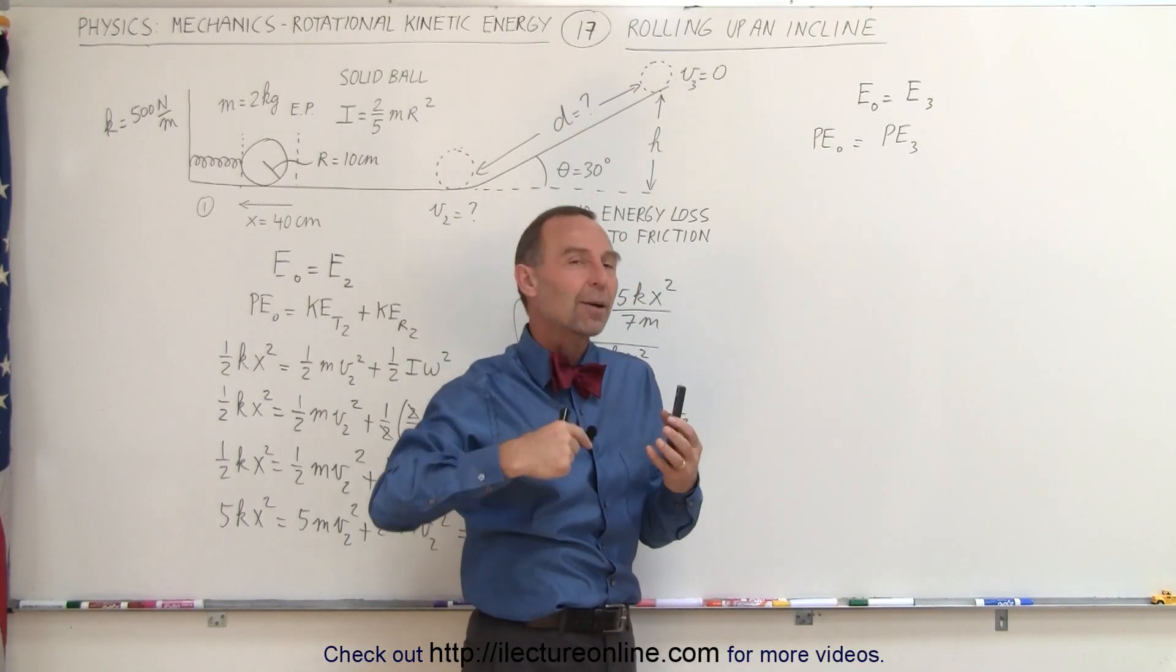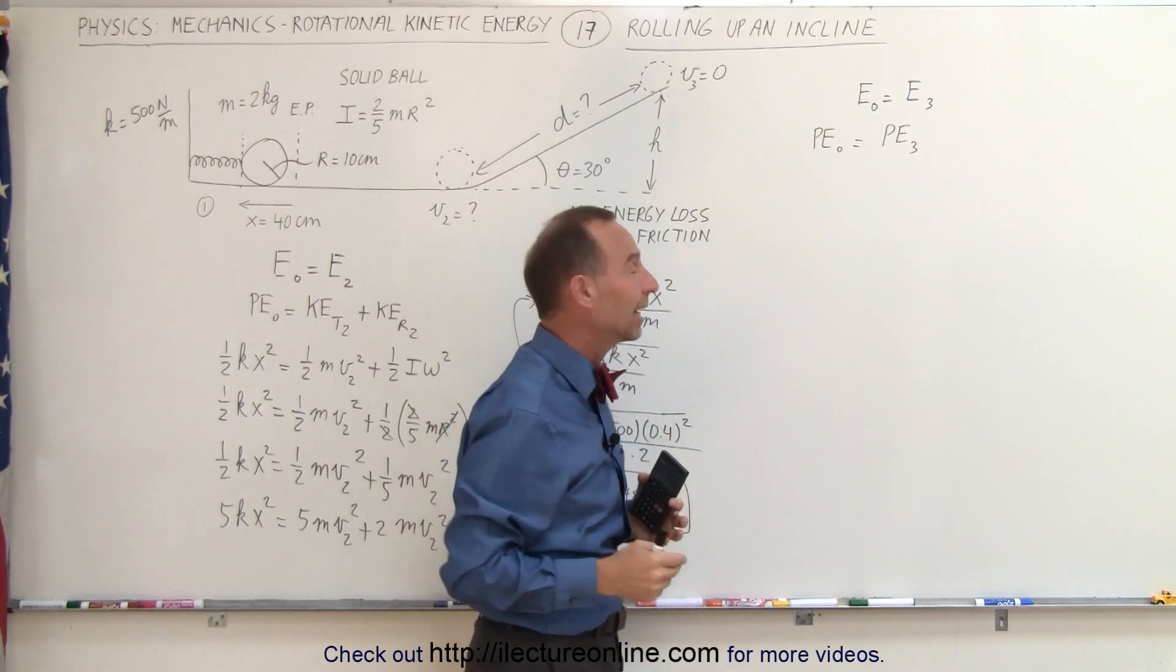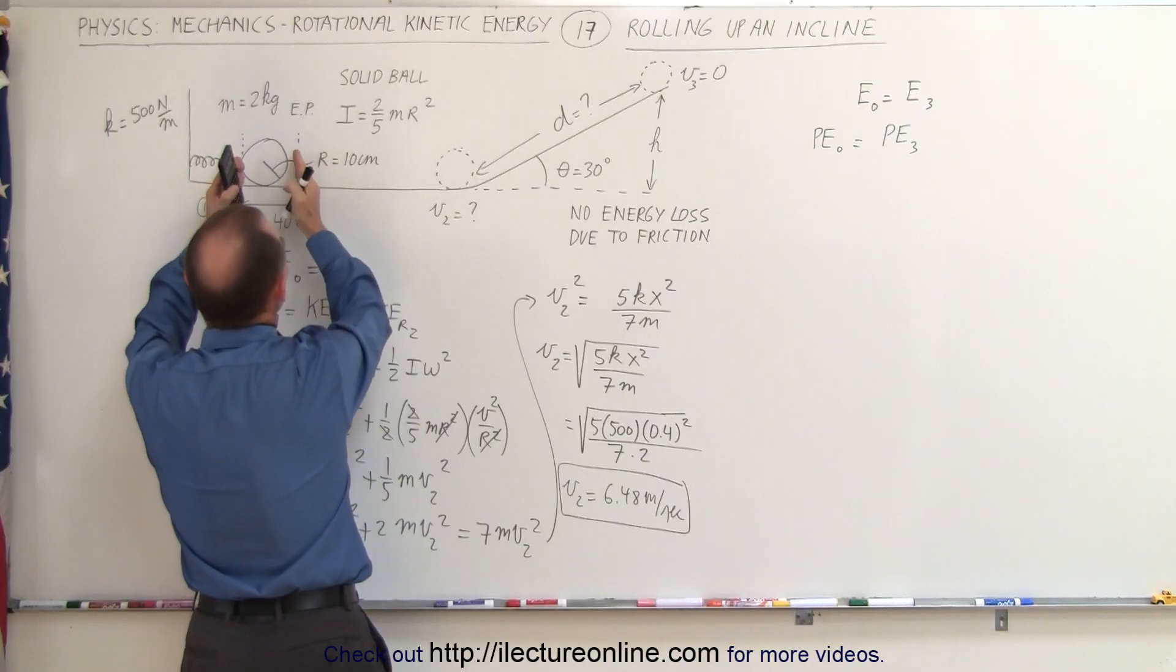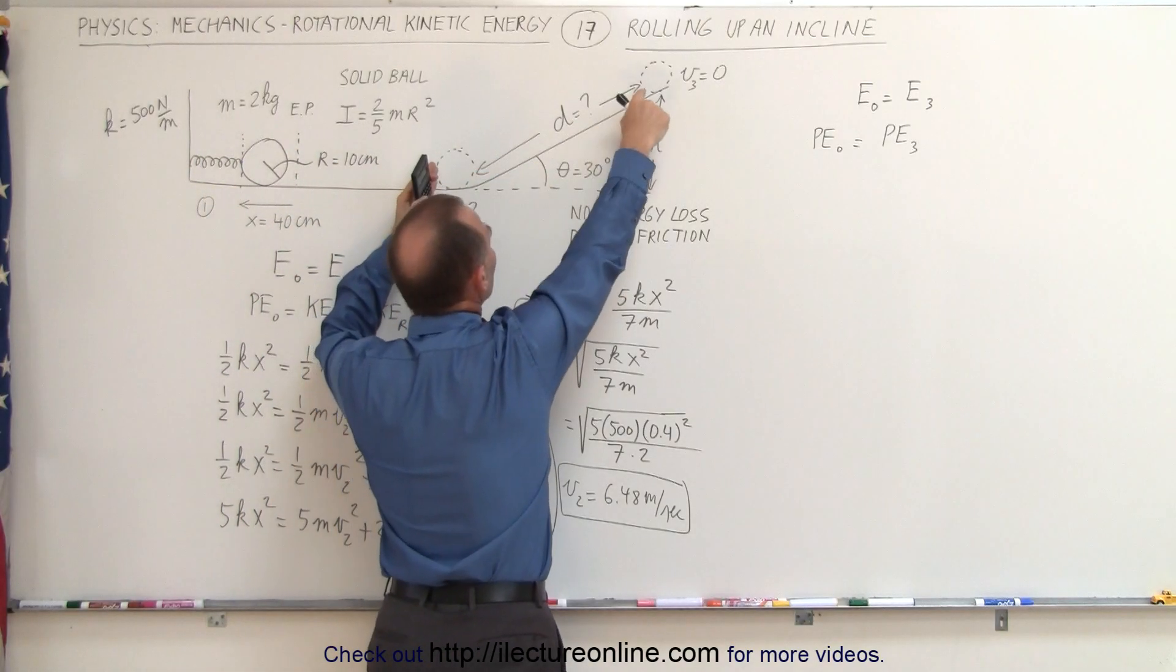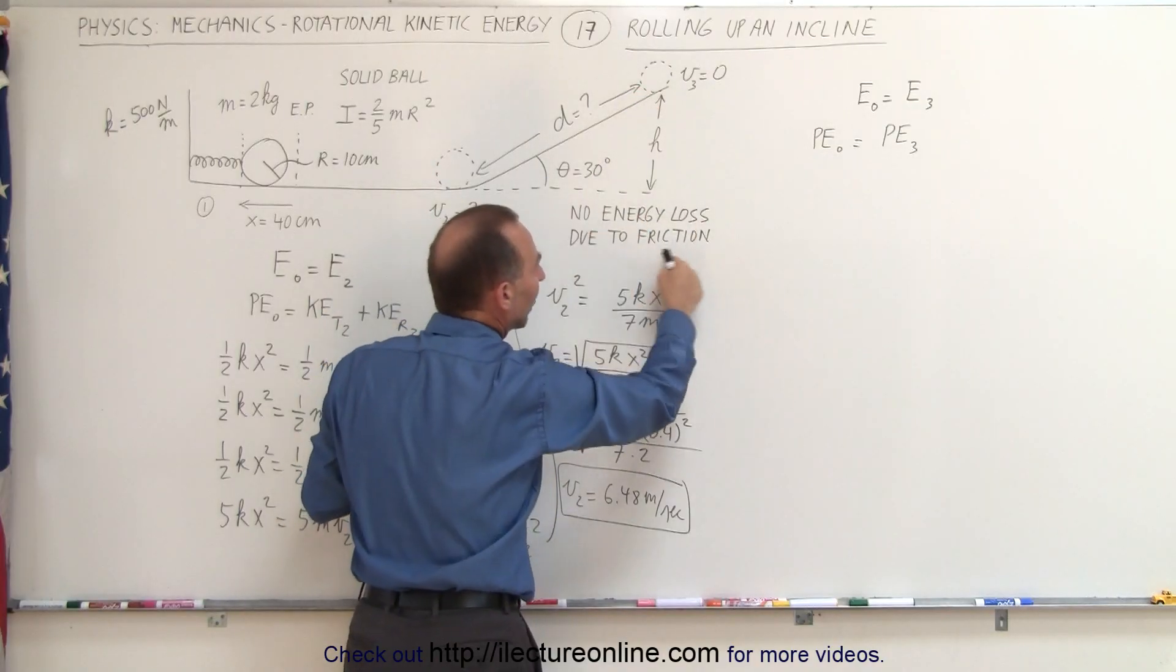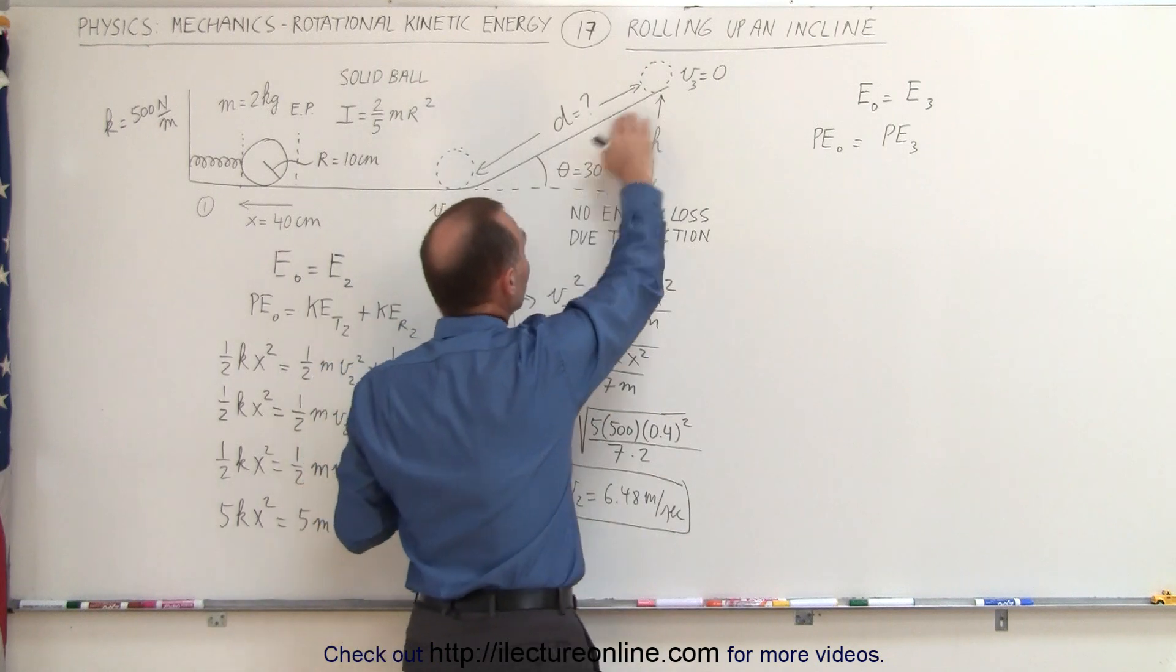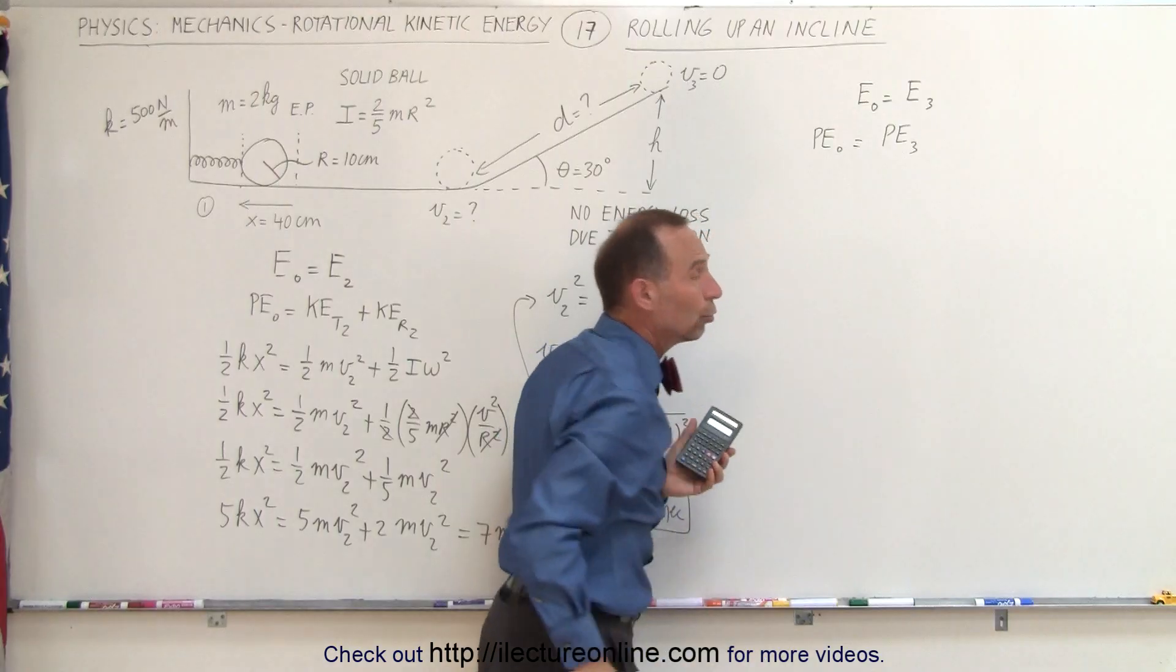You can see that this equation has no kinetic energy terms. Therefore, it doesn't matter if the object is rotating or sliding because it no longer has any kinetic energy. All the kinetic energy of the spring was turned into rotational and translational kinetic energy of the object as it was rolling. But then when it gets to the top, assuming again there is no energy loss due to friction, then when it gets to the top, it no longer has any kinetic energy left.